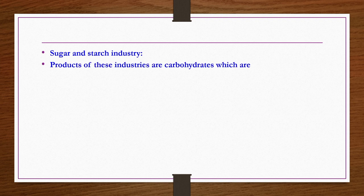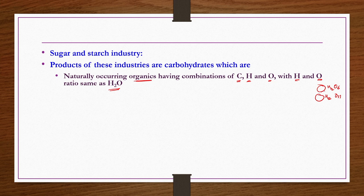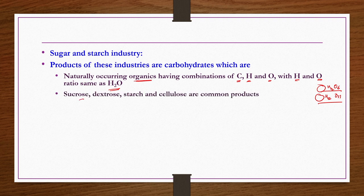Next is sugar and starch industry, which come under carbohydrates industry. Products of these industries are carbohydrates — naturally occurring organics having combinations of C, H, O such that H and O are in the same ratio as H2O. Some common products are sucrose, dextrose, starch, and cellulose.